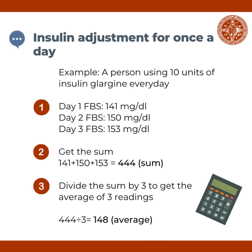Here is an example of insulin adjustment in a person using glargine at 10 units subcutaneously once daily. Fasting blood sugar was obtained on days 1 to 3 with the following results: day 1 — 141 milligrams per deciliter, day 2 — 150 milligrams per deciliter.